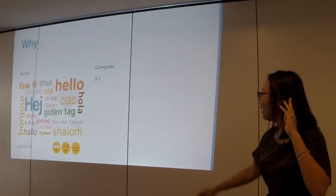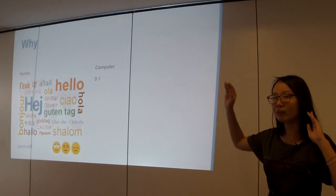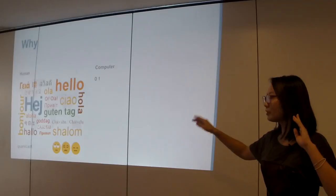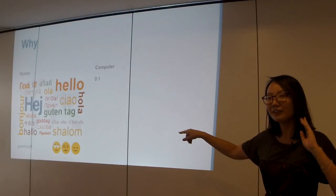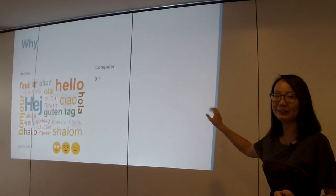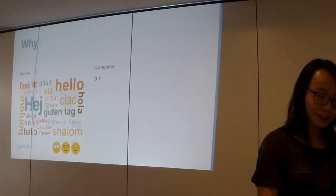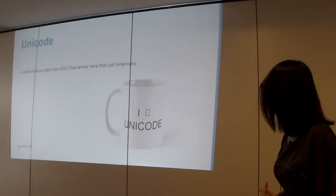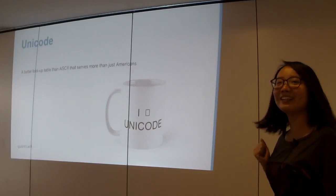Yeah, essentially the problem is that we don't just have English. We have a lot more languages that we have to deal with, plus emojis. What is a better place with emojis, right? But computers still speak only zeros and ones. So how do we solve that problem? That's how we end up with Unicode.